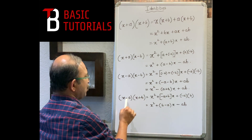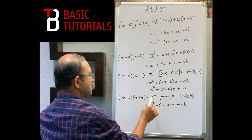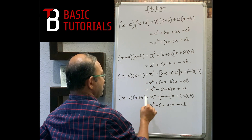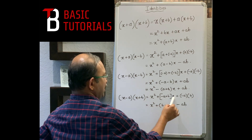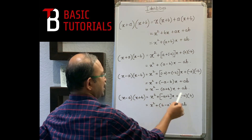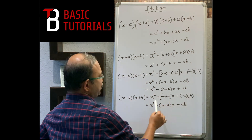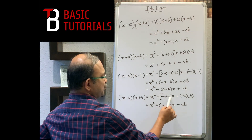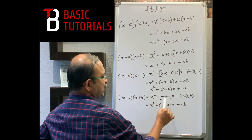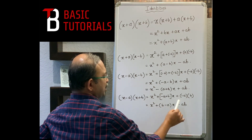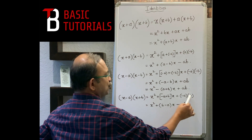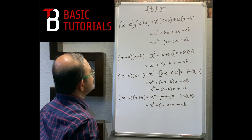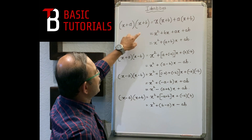For (x-a)(x+b): x² + ((-a) + b)x + (-a)×b = x² + (b - a)x - ab. So with -a and +b, we get x² + (b-a)x - ab.